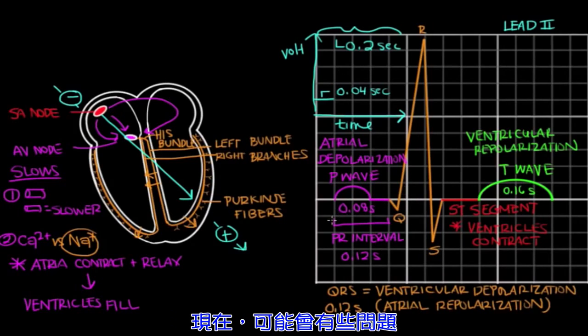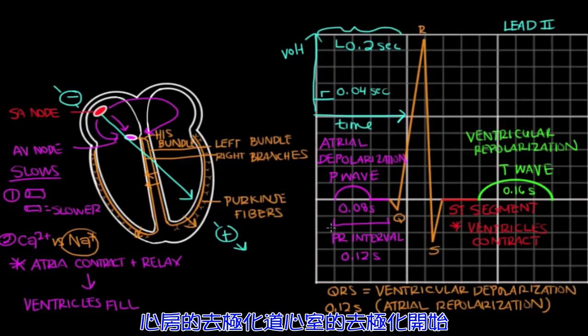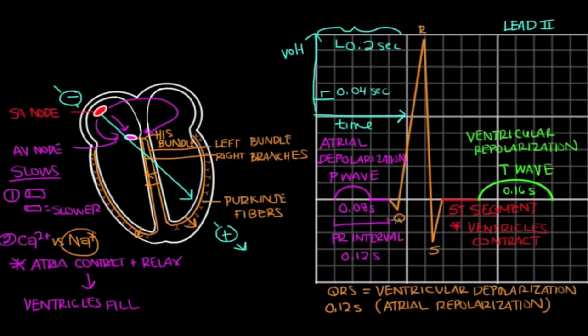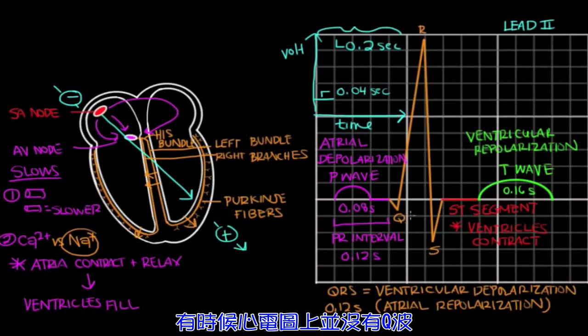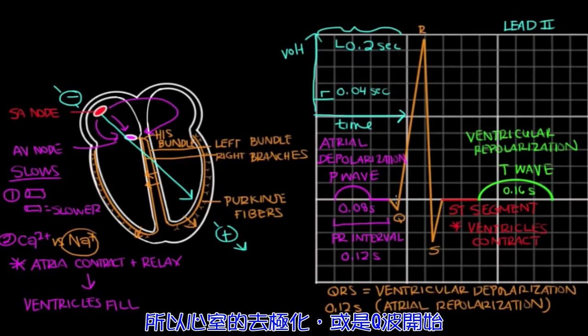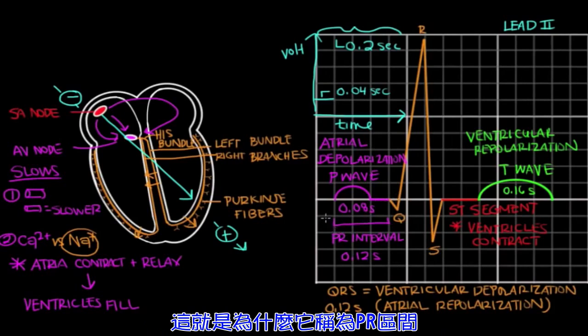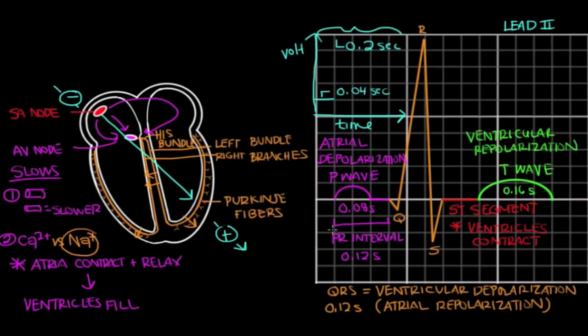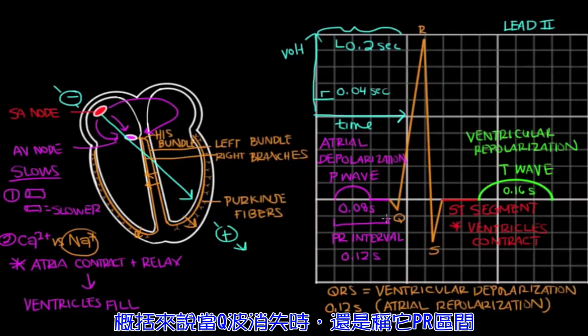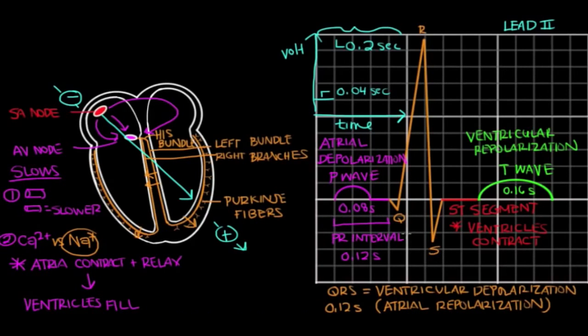Now something you might be asking yourself is, why is the PR interval called the PR interval when it goes from the P to the Q wave? Well, remember we said that the PR interval is from the beginning of atrial depolarization up until the start of ventricular depolarization. Sometimes there's no Q wave on the EKG. It's just not found. So ventricular depolarization or the start of it is actually the start of the R wave, which is why it's called the PR interval. If there is a Q wave, you can call it the PQ interval. However, to generalize, we call it the PR interval for the times that the Q wave is lost.